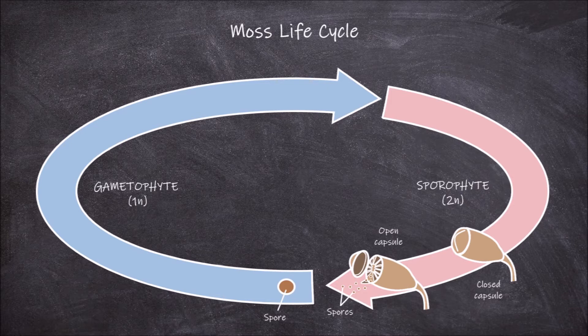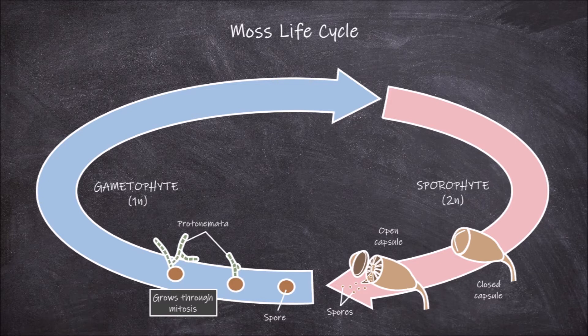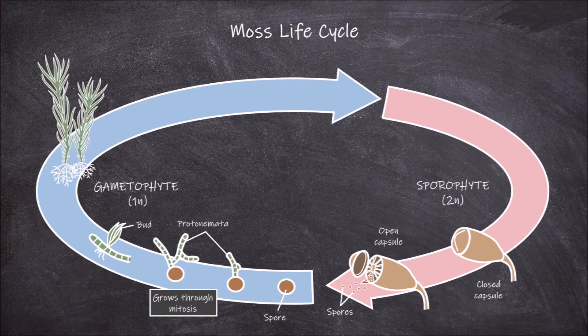These spores grow through the process of mitosis, first forming a thread-like chain of cells known as the protonemata, which is still haploid. From here, haploid buds form along the growing chain of cells which will eventually grow into the leafy shoots. It continues to grow into what is known as the gametophyte, which is still haploid.